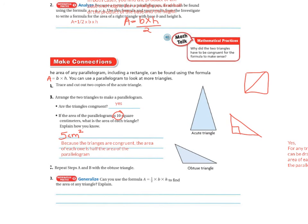And the reason is because the triangles are congruent, and the area of each one is half the area of a parallelogram.